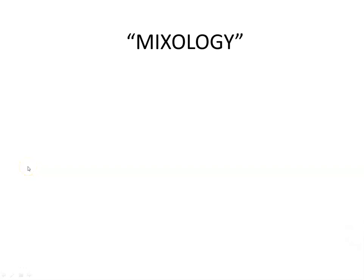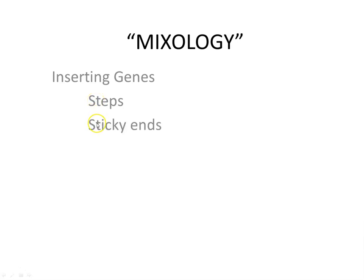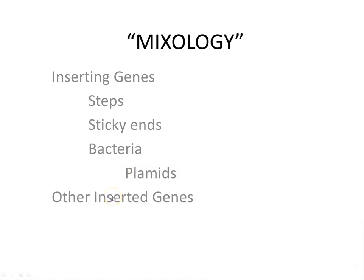Today we're going to be continuing our study of genomic engineering, going into the section known as mixology. We're going to learn about how we can take genes from one organism and insert them into another organism. We'll go through the steps of how this is done, talk about sticky ends and restriction enzymes, how bacteria and plasmids are used, other types of genetic engineering, and cloning — which has nothing to do with the gene-inserting stuff we're talking about here.